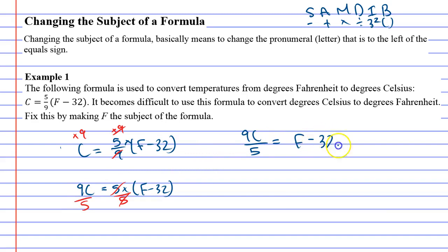Equals F minus 32. We do not need brackets anymore. And if you look at this, you'll notice that all we need to do now is plus the 32, plus the 32. I just wrote 35 down, didn't I? 32.